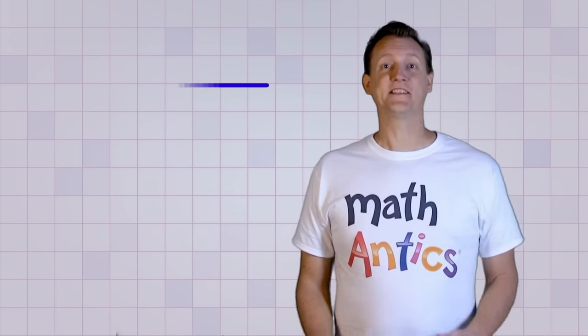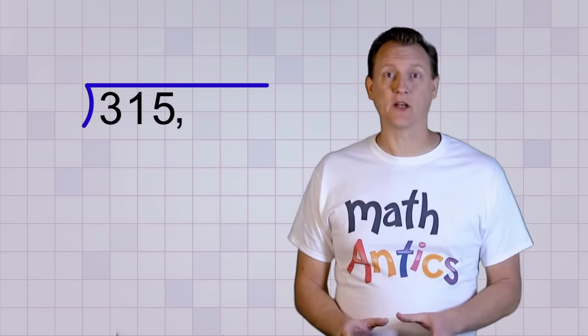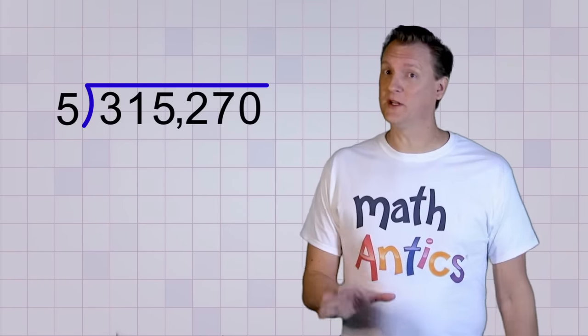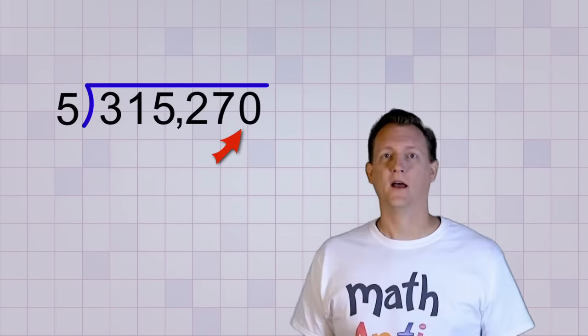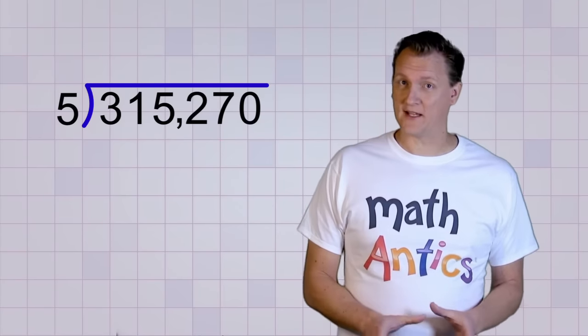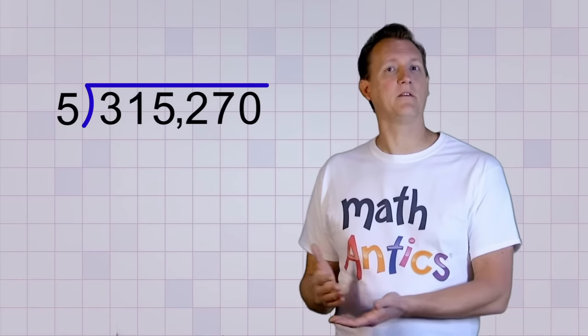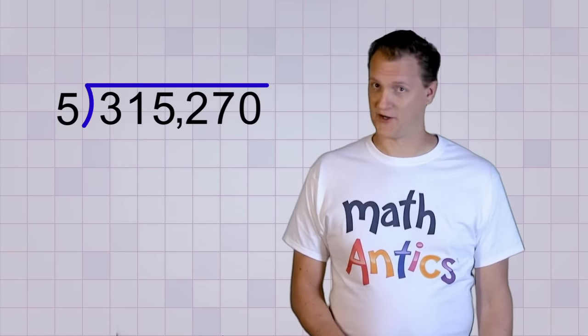Okay, now that you know the procedure for long division, are you ready to see a really long problem? Good! I thought so! Let's divide 315,270 by 5. Now don't worry, it's really not that hard if you just go digit by digit. I'm going to work the problem pretty fast, so don't worry if you don't follow all the math. Just focus on the repeating division process as we go along. Are you ready?